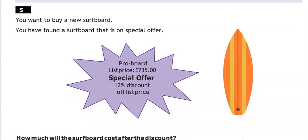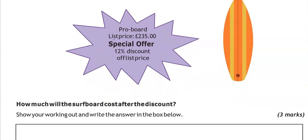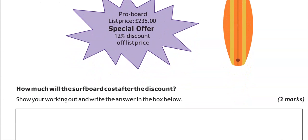Surfing. You want to buy a new surfboard. You have found a surfboard that is on special offer. And we've got pro board. List price £235. Special offer, 12% discount off list price. How much will the surfboard cost after the discount?